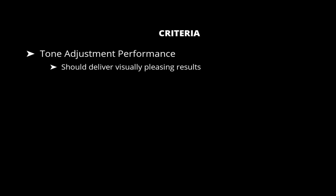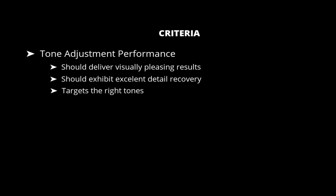In order of importance, at number one is tone adjustment performance. The ability to make quality tone adjustments is the most important function of any RAW editor. For this criteria we look at whether basic tone sliders — exposure, shadows, highlights, blacks — produce visually pleasing and artifact-free results, whether adjustments can recover detail in extremely dark or bright areas, and whether they properly take advantage of the extra data in a RAW file.